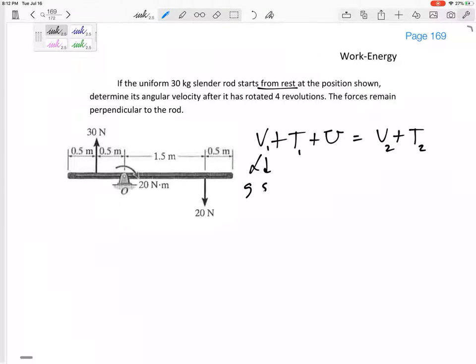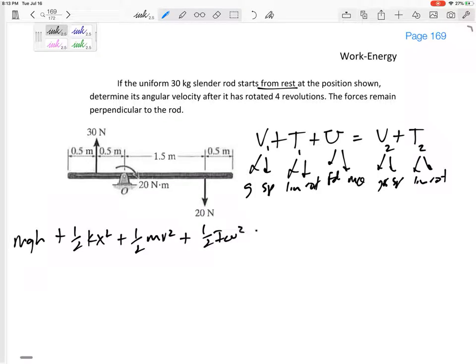This could be gravity and spring, linear and rotational, F·D, M·θ—gravity and spring, linear and rotation. I'm gonna write the whole thing: MGH + ½KX² + ½MV² + ½Iω² + F·D + M·θ equals all of that final: MGH + ½KX² + ½Iω² + ½MV².